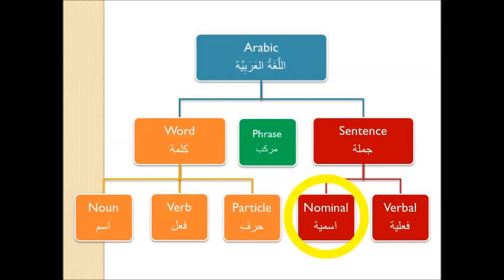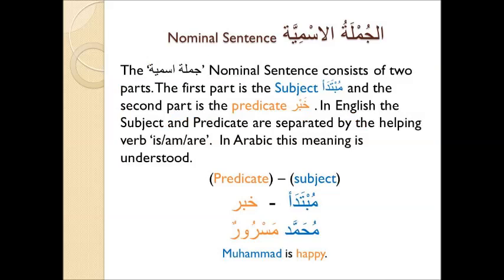And now we will focus on the nominal sentence, al-jumlatul-ismiyah. The jumla ismiya, nominal sentence, consists of two parts. The first part is the subject (mubtada), and the second part is the predicate (khabr). In English, the subject and predicate are separated by the helping verb is, am, and are. In Arabic, this meaning is understood. So in this sentence, we have the example: muhammadun masroor, meaning Muhammad is happy. So Muhammad is the mubtada (the subject), and masroor is the khabr (or predicate). The particle 'is' is placed between them to indicate the nominal sentence in English.